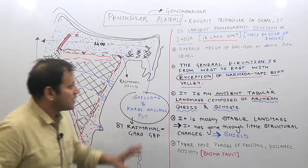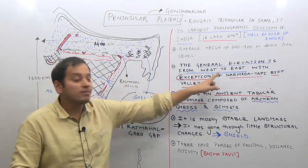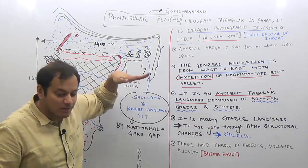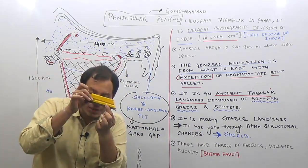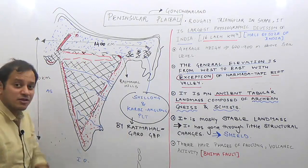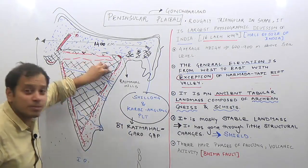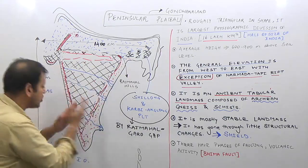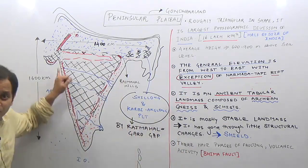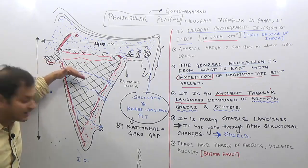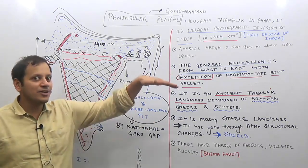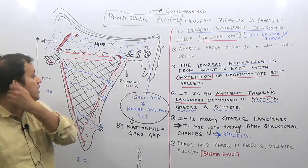This happens because the general elevation of the peninsular plateau tilts from west to east. Therefore, all major rivers — Mahanadi, Subarnarekha, Godavari, Krishna, Kaveri — originate near the Western Ghats but travel the entire distance eastward and empty into the Bay of Bengal. The general tilt of the land is to the eastern side.